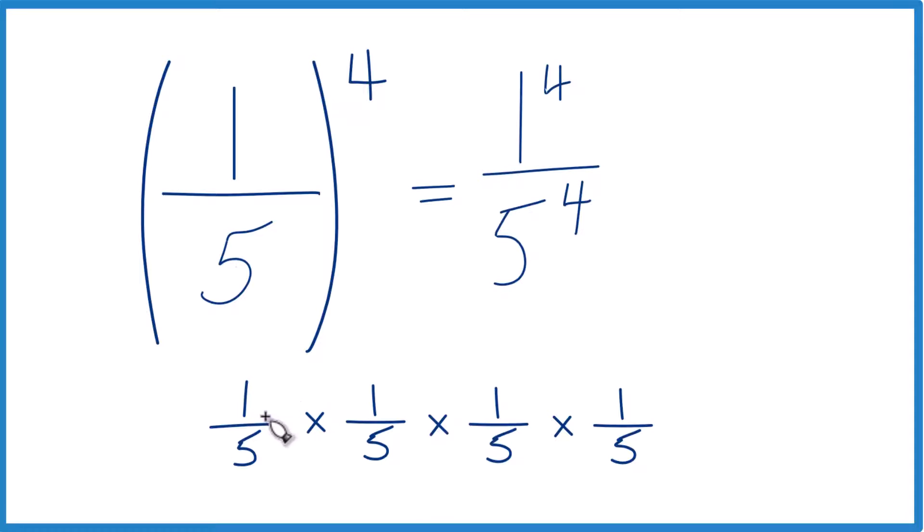Now, one times one times one times one. That's just one. And five times five is twenty-five. Twenty-five times five is one-hundred-and-twenty-five. And one-hundred-and-twenty-five times five is six-hundred-and-twenty-five.